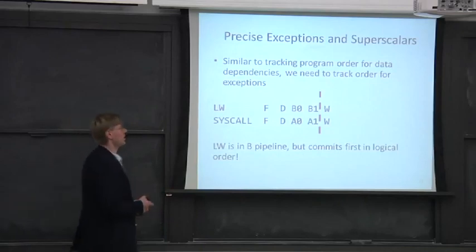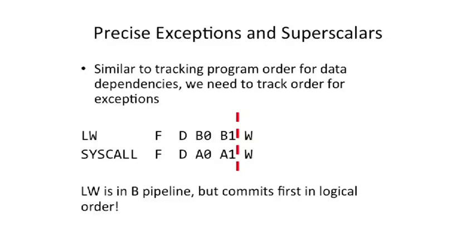Let's take an example. Let's say we have a load and then a syscall instruction. Both these instructions can effectively take interrupts or exceptions. The load can take something like a TLB miss or an alignment fault. The syscall instruction, by definition, is effectively making an interrupt occur.